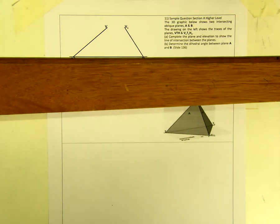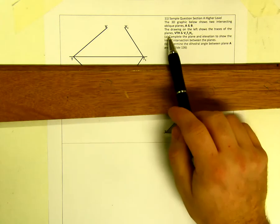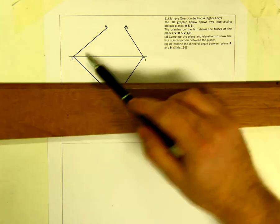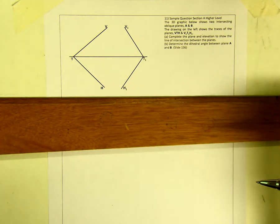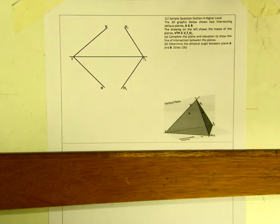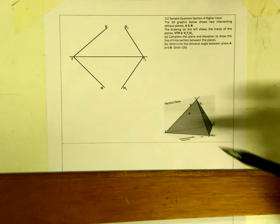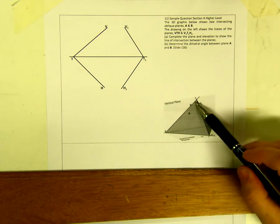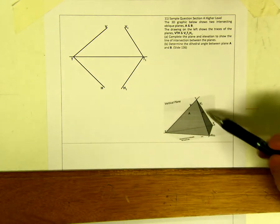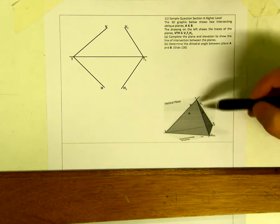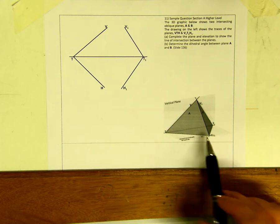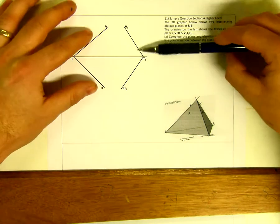The question requires us to complete the plan and elevation to show the line of intersection. We have the vertical traces and horizontal traces. In the 3D image, you can see the vertical trace where our oblique plane touches the vertical plane, and where the other oblique plane touches the vertical plane. The horizontal traces are also shown for the oblique planes.